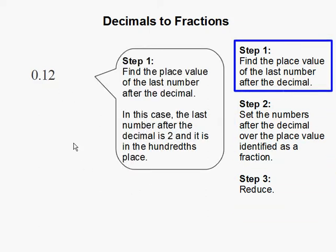Step 1. Find the place value of the last number after the decimal. In this case, the number after the decimal is 2, and it is in the hundredths place, because 1 is in the tenth place and 2 is in the hundredths place.